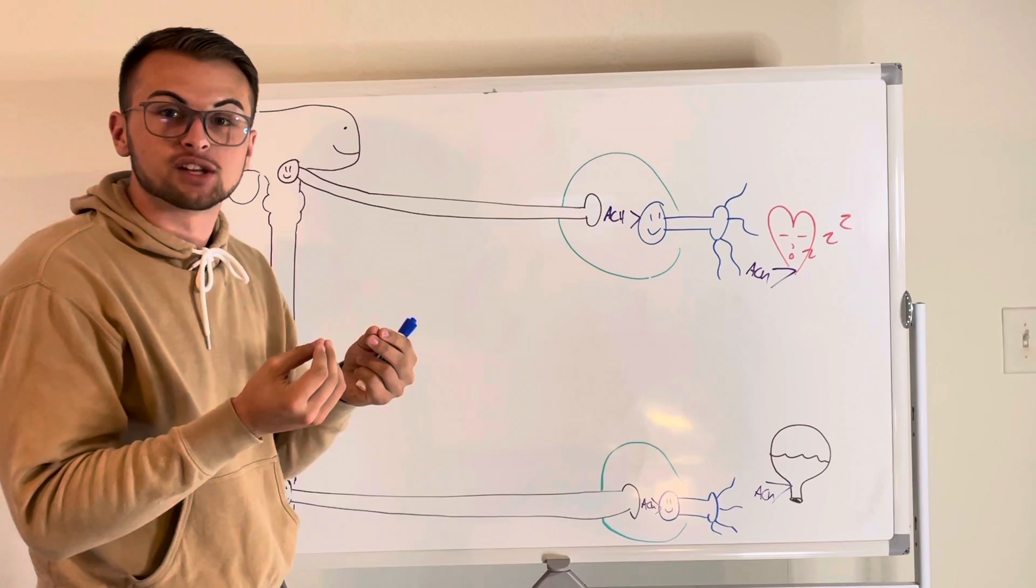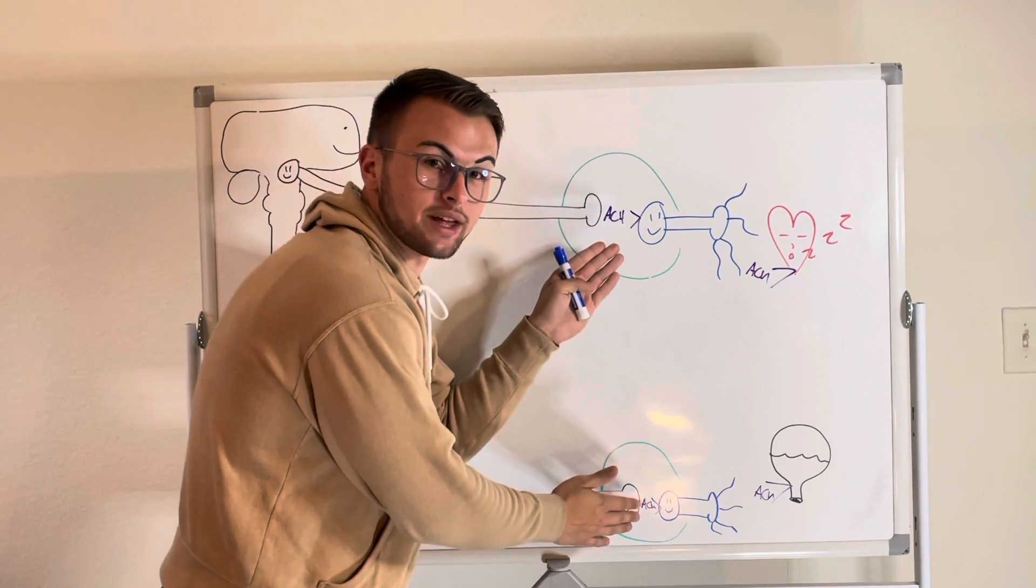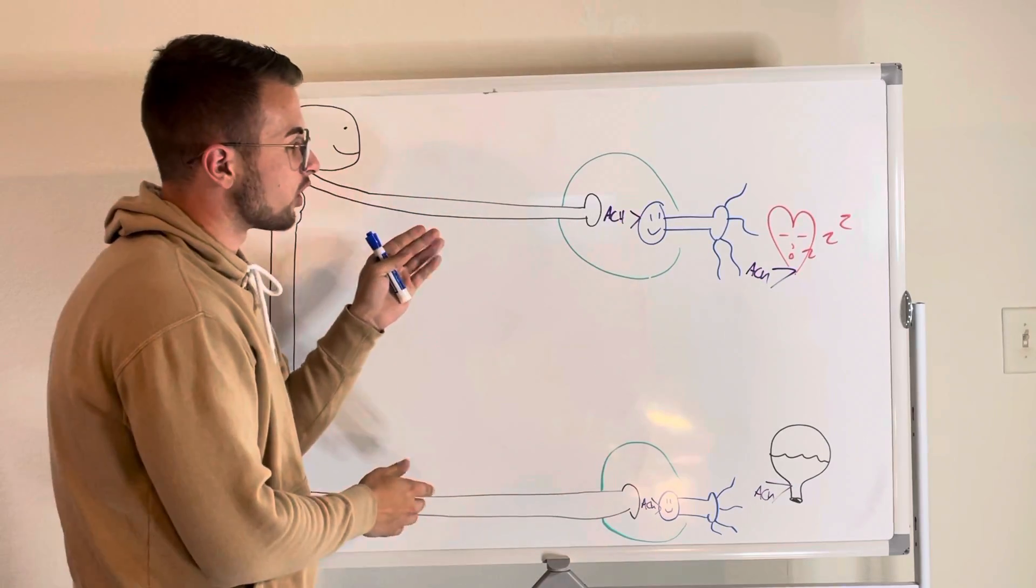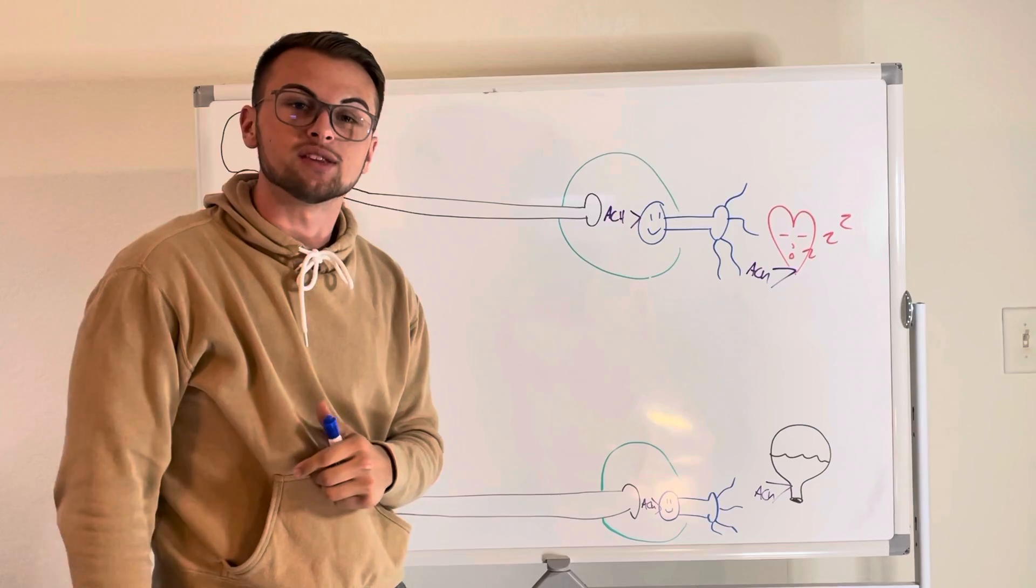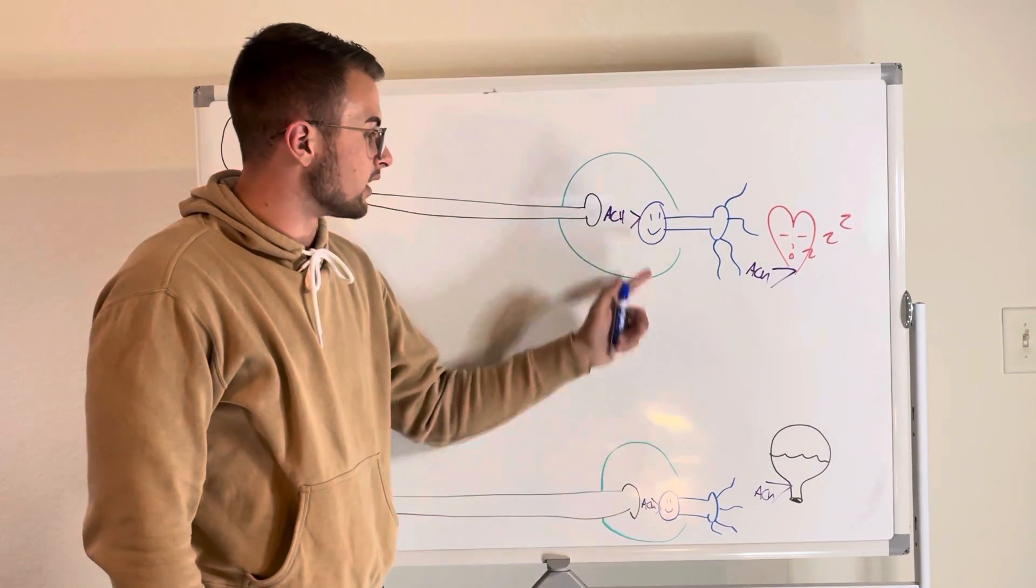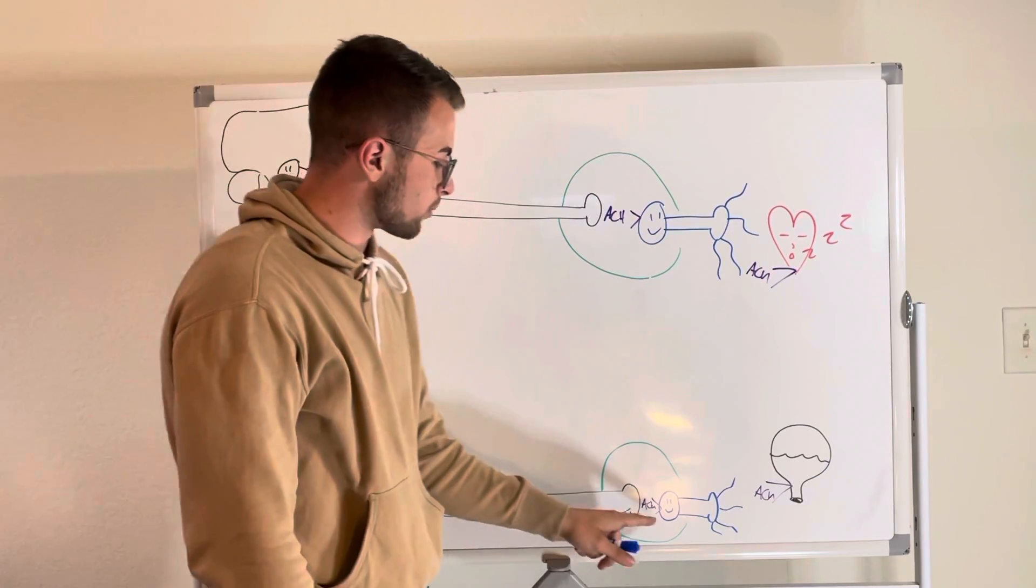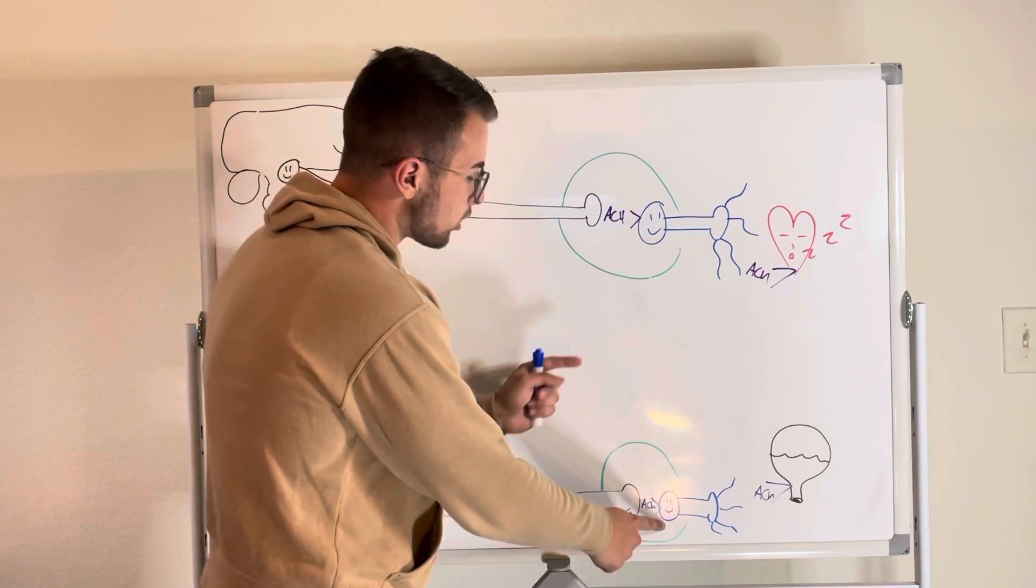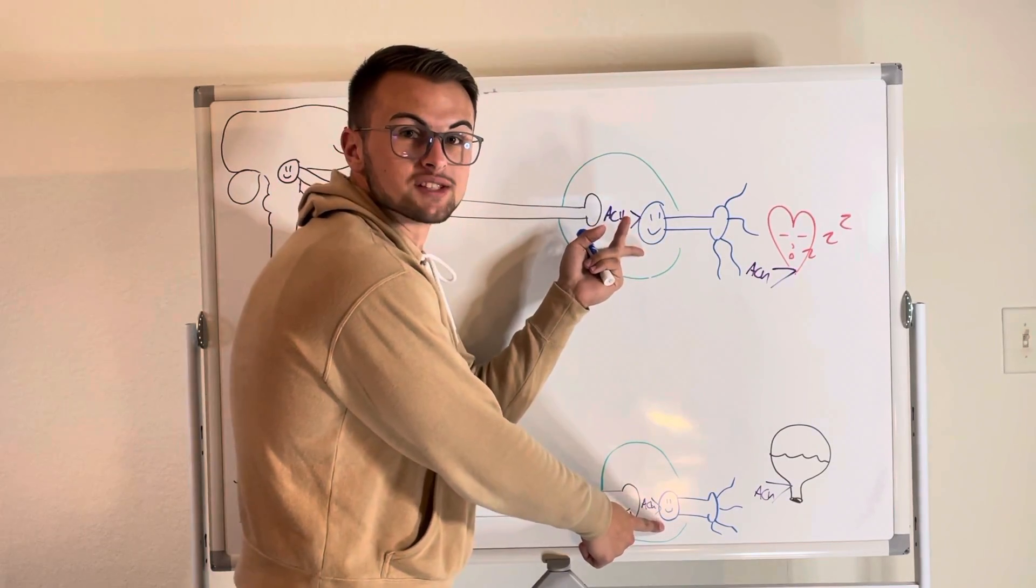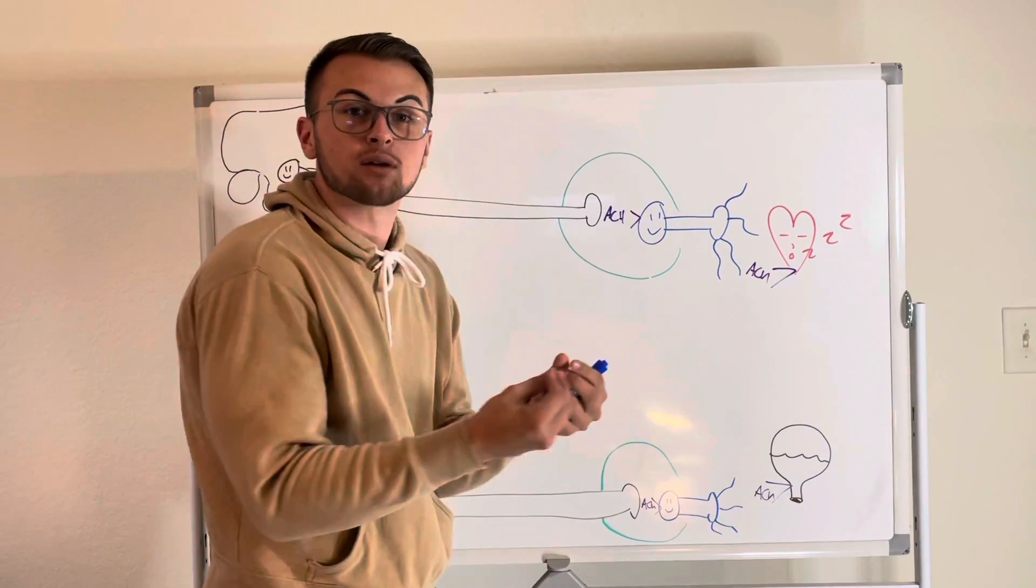These action potentials basically release acetylcholine from the preganglionic neurons, which then bind to the nicotinic 2 receptors or N2 receptors, which are located on the cell bodies of our postganglionic neurons. So important thing to remember here is that these N2 receptors are on the cell bodies of the postganglionic neurons and they will become activated when acetylcholine is bound to them.